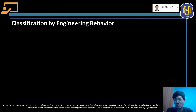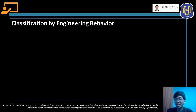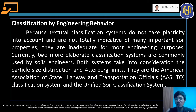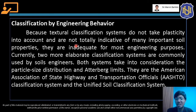Previously, we discussed the first category in classifying soil — the textural classification of soil using USDA. Now we're going to discuss the second category: classification of soil based on the engineering behavior of the soil. In USDA or textural classification, only particle size distribution is used. Plasticity of the soil — an important property for interpreting soil characteristics — is not taken into account. Because of that, this classification is not totally indicative of many important soil properties and is inadequate for most engineering purposes.